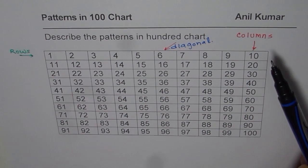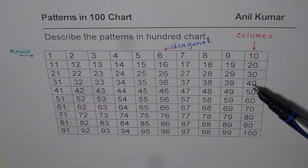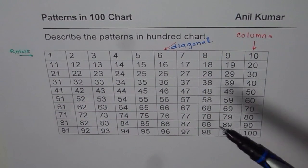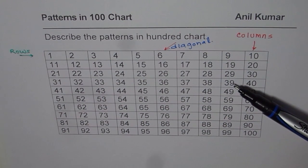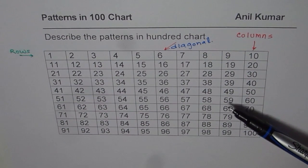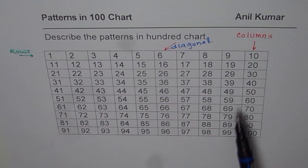How about columns? If you follow a column: 10, 20, 30, 40 — the numbers are increasing by 10s. Any column works the same way: 9, 19, 29, 39, 49. As you continue adding 10s, you get more numbers in the same column. So the pattern in a column is that the numbers increase by 10.